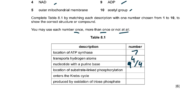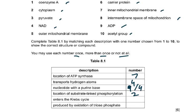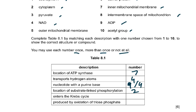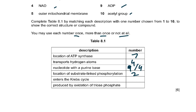Location of substrate-linked phosphorylation — that was 2. Substrate-level phosphorylation occurs in glycolysis, in the cytoplasm, and also in the Krebs cycle. There's no ATP made in the link reaction. What enters the Krebs cycle? That had to be 10 — the acetyl group. Pyruvate becomes acetyl-CoA, so the acetyl group enters the Krebs cycle.